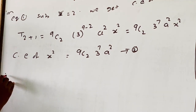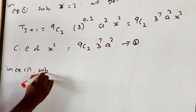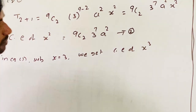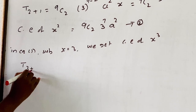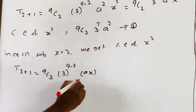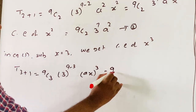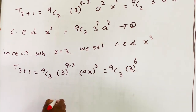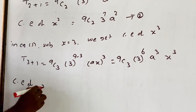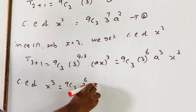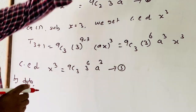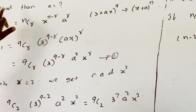Now, substituting r=3 into equation one to get the coefficient of x³: T(3+1) = 9C3 * 3^(9-3) * a³ * x³ = 9C3 * 3^6 * a³ * x³. So the coefficient of x³ is 9C3 * 3^6 * a³.